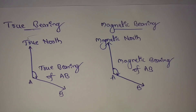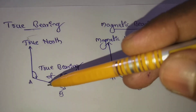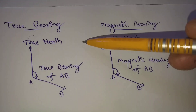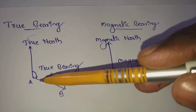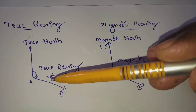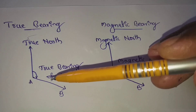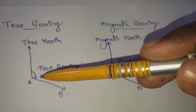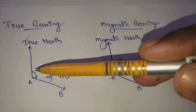The next topic is true bearing. The true bearing of a line AB is the horizontal angle between the true meridian and the line AB. This is the true meridian, and this is the AB line — this angle between them is the true bearing.